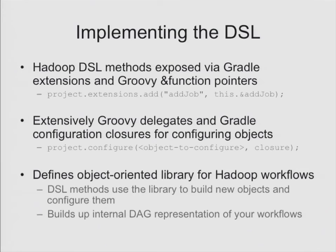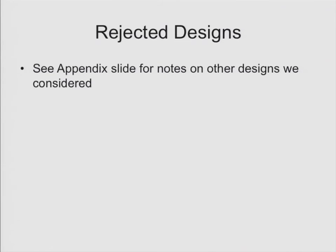I do want to give people a chance to take a break. I'll mention that implementing the DSL makes quite a bit of use of function pointers, closures, and delegates. Grab me during the break if you want to learn more. I also rejected a number of common Groovy DSL mechanisms — Groovy Builders and Gradle domain objects both had problems, so I rejected those. Details are in the appendix.